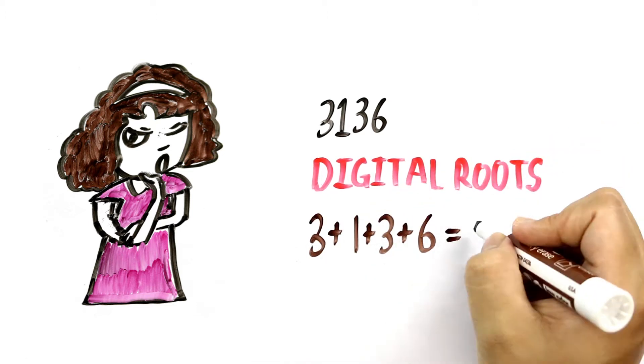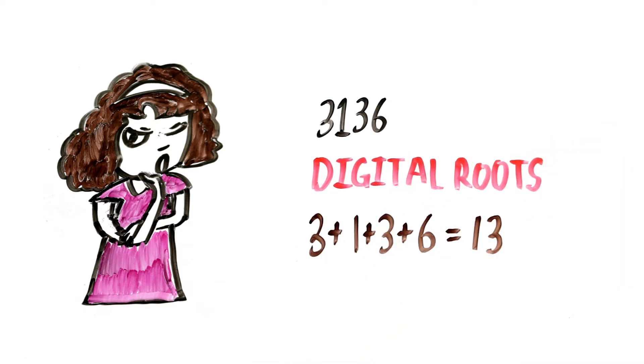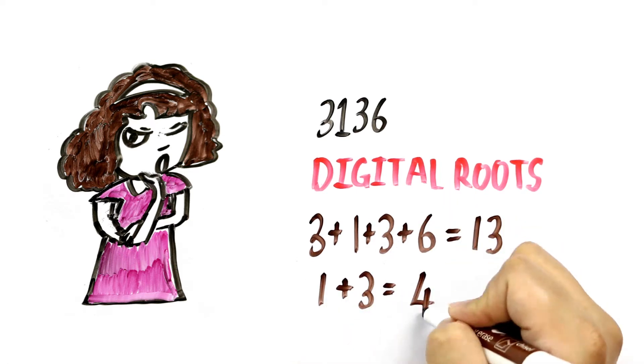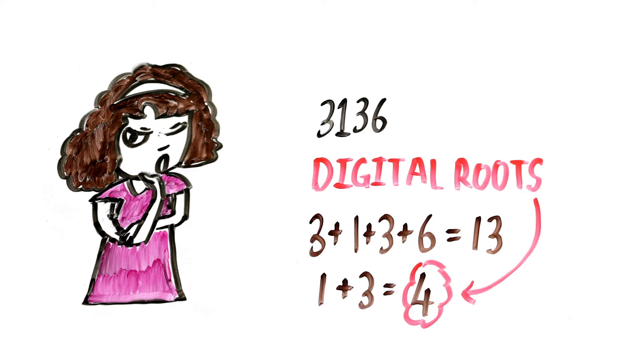Now since 13 is a double digit number, we have to add 1 and 3. This process has to be done until you get a single digit number. So here, 1 plus 3 equals 4, and this 4 is the digital root of the number 3136.